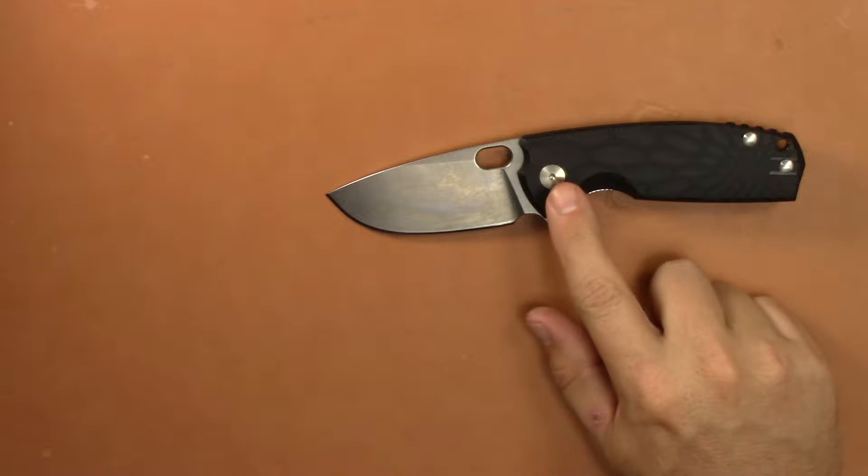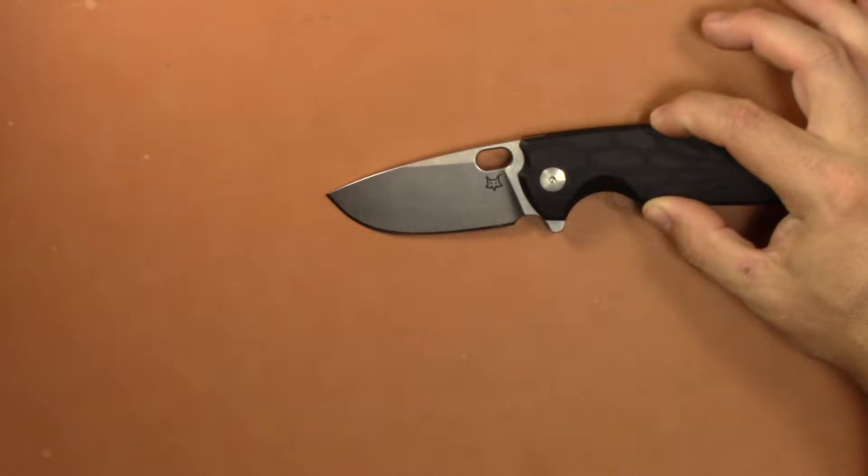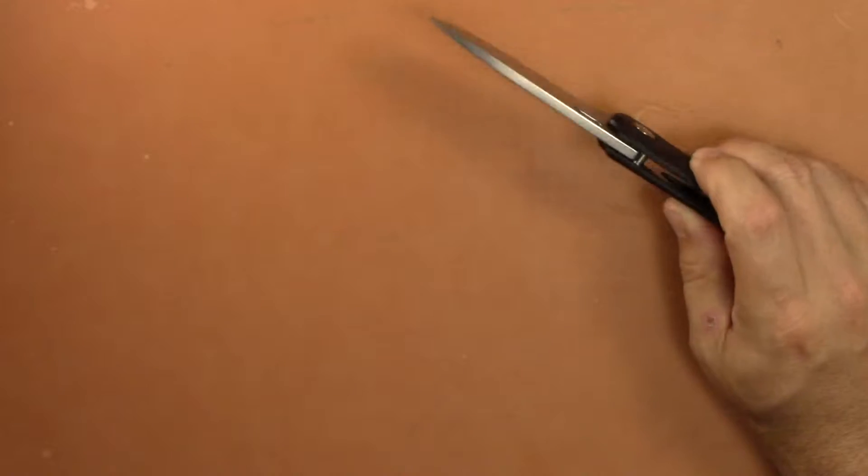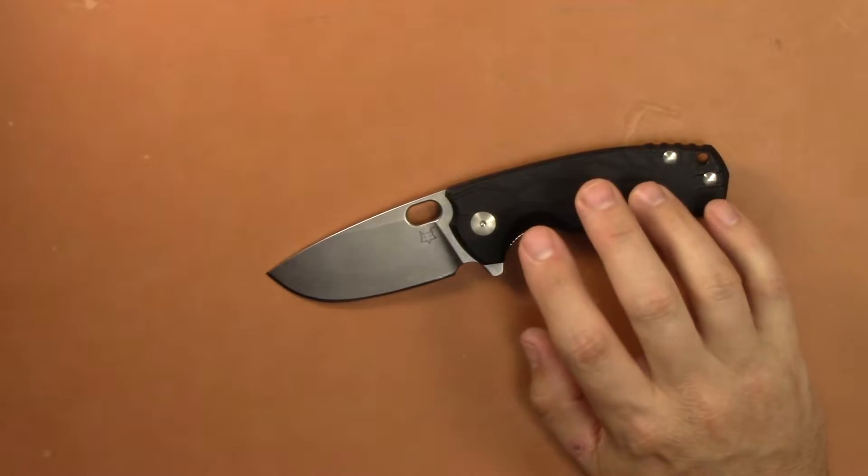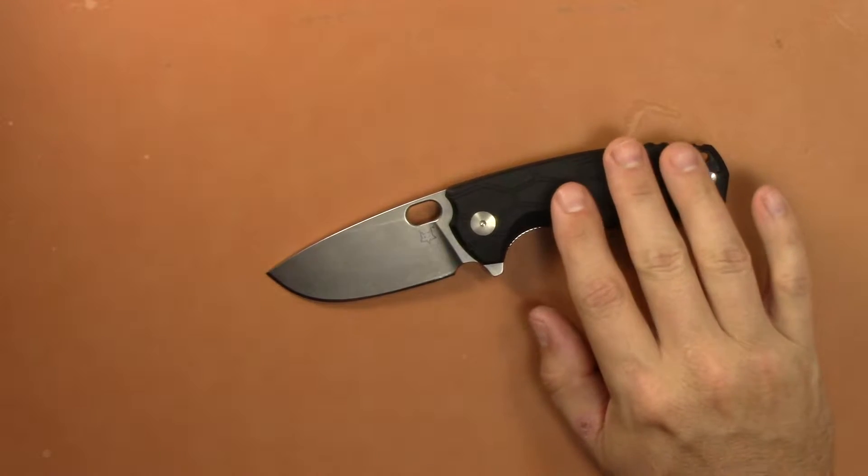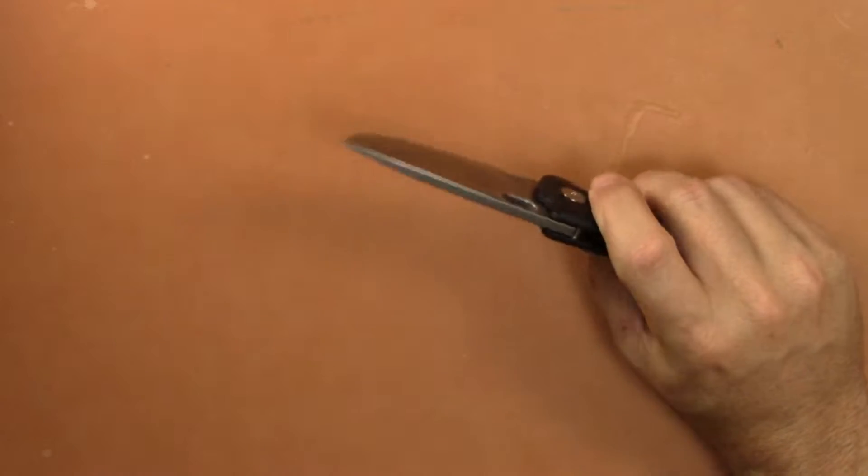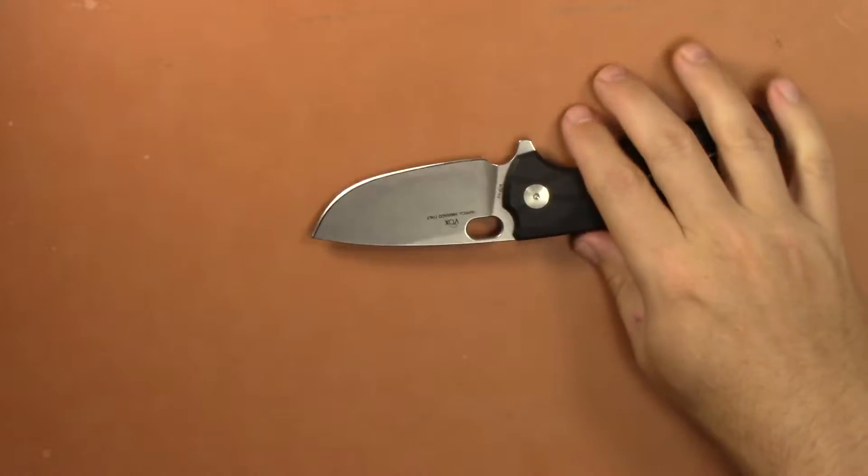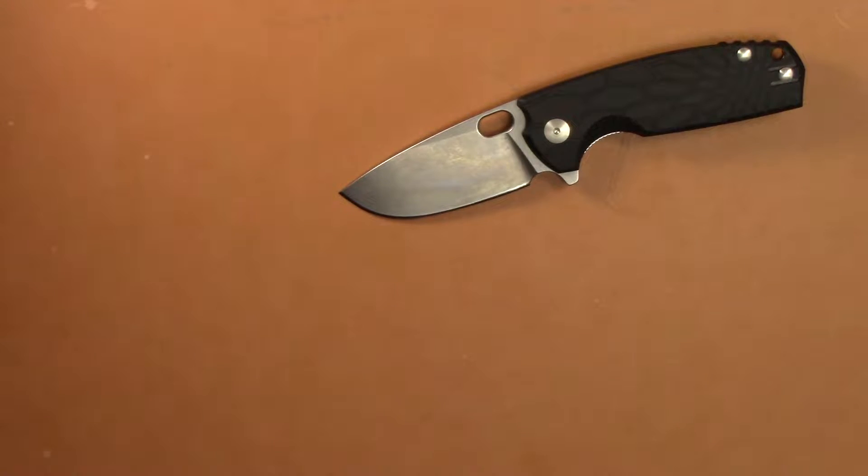You're looking at N690 Bohler drop point blade with flat grind stone wash finish. Handle length is four and a half inches, width of the handle is 1.375 which is pretty wide, and pretty thick at over a half inch at 0.57. It's made of an FRN material, this one has black, they come in blue and OD green and an all black one that's pretty slick. You have stainless steel liners on this one, weighing in at 4.75 ounces, with a nice tip up right hand or left hand carry pocket clip.